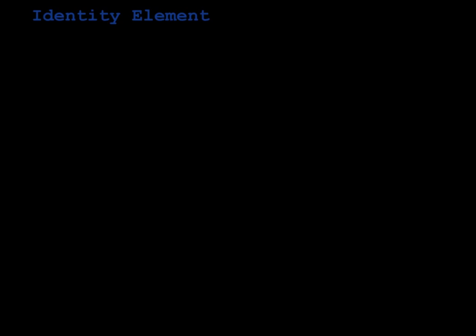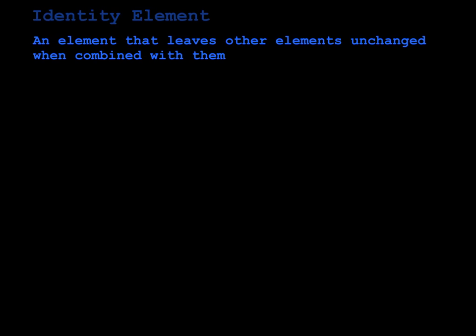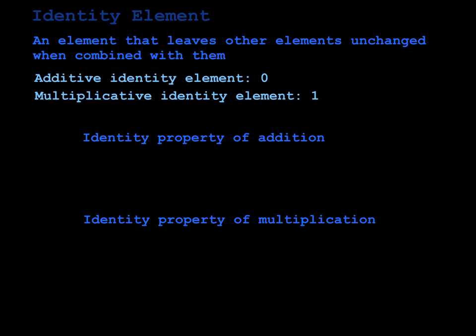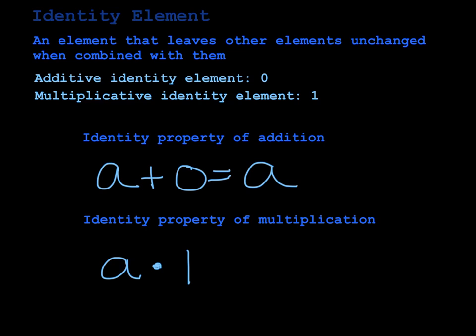The fourth thing we're going to talk about is the identity element — any element that leaves other elements unchanged, letting them retain their identity. That identity element is not always the same. When adding, the number you can add to any number without changing it is 0. When multiplying, it's 1 — because multiplying anything by 0 gives 0. So the identity property of addition says a plus 0 equals a, and the identity property of multiplication says a times 1 equals a.